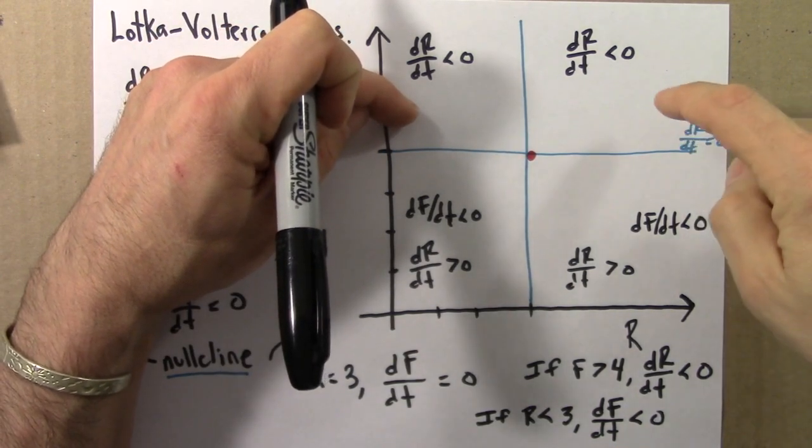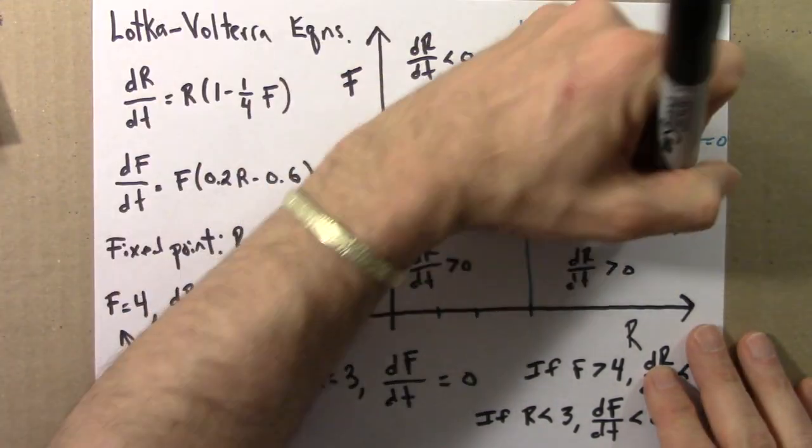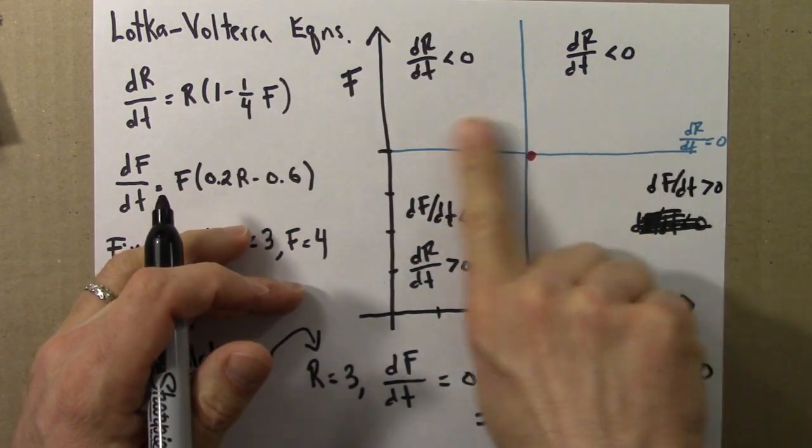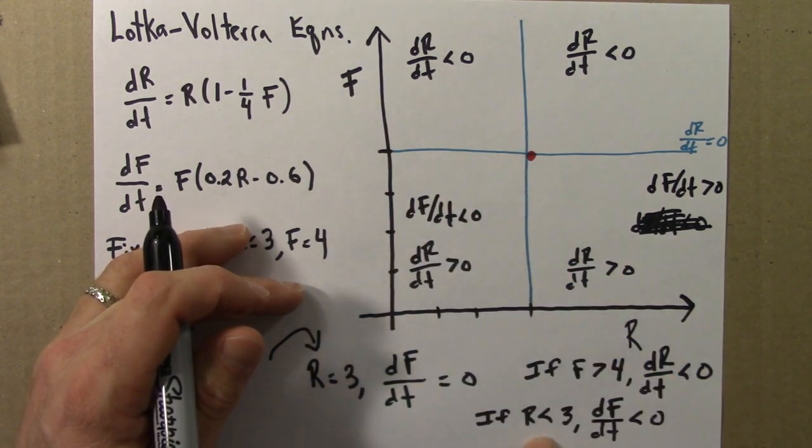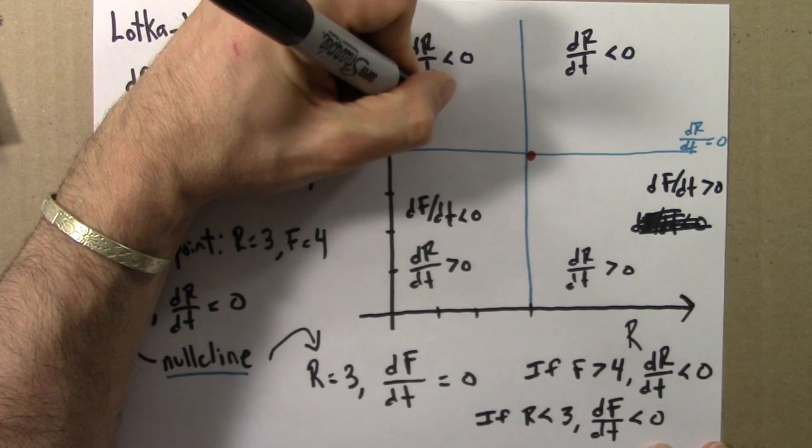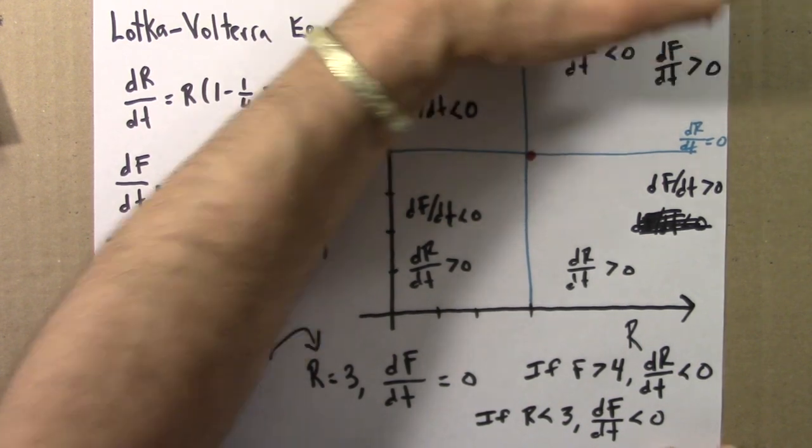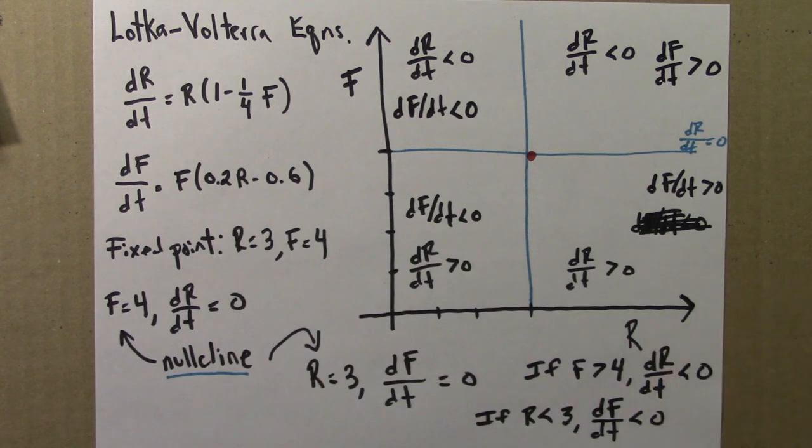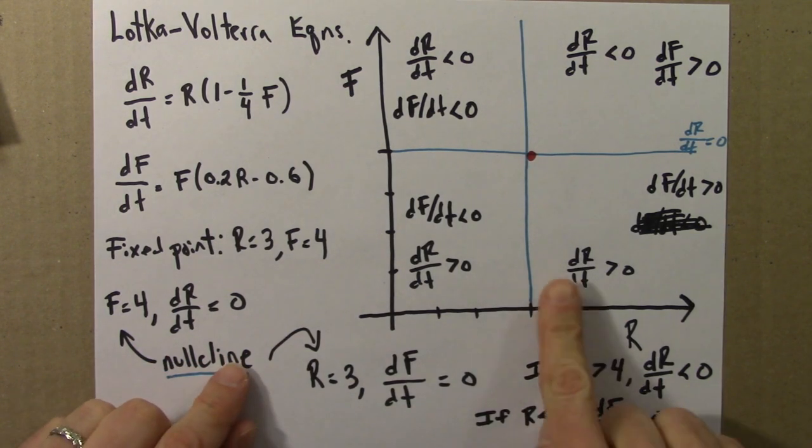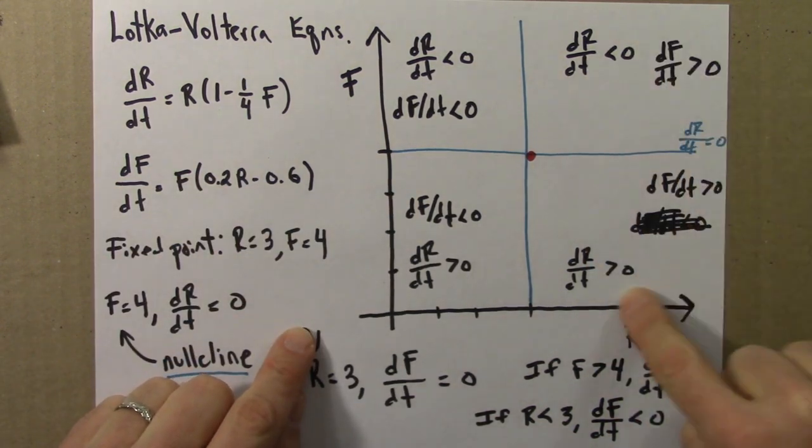And df/dt will be positive. Oops, uh-oh, hang on. I knew I was going to make a mess of this. Alright, when I'm to the left of this line, df/dt is less than 0. If r is less than 3, that means I'm over here, this is less than 0. So, df/dt is less than 0. Here, df/dt is greater than 0. Okay, so let me summarize this. So, this analysis says that as far as the foxes are concerned, if I'm to the left of this, so I'm somewhere over here, the fox population will decrease. And if I'm over here, the fox population will increase.